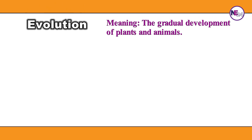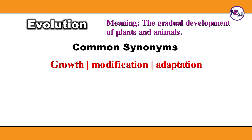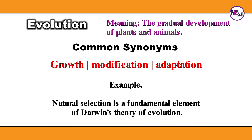Evolution: the gradual development of plants and animals. Growth, modification, adaptation. Natural selection is a fundamental element of Darwin's theory of evolution.